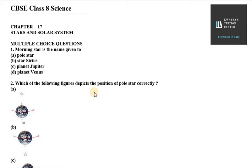The first one is: morning star is the name given to pole star, star Sirius, planet Jupiter, or planet Venus. So the right option is planet Venus is known as the morning star.